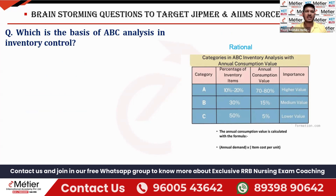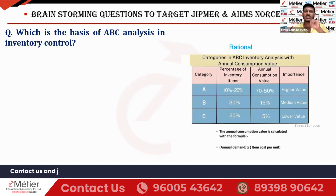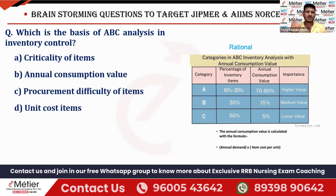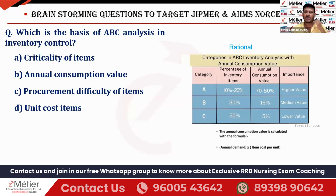Which is the basis of ABC analysis in inventory control? I have given two important key points: cost criteria and annual consumption value. Based upon these two, only the ABC analysis inventory method runs. The four options given are: criticality of items, annual consumption value, procurement difficulty of items, and unit cost items. The right answer is Option B — annual consumption value.